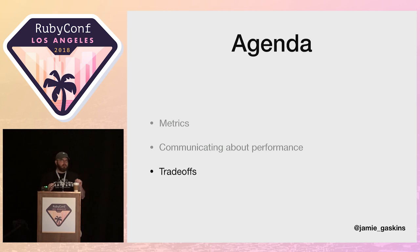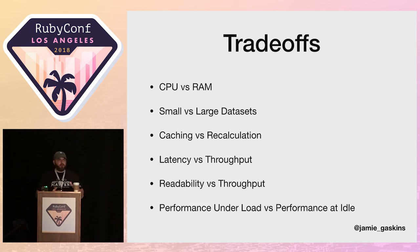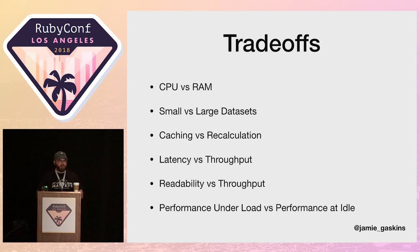So that's communicating about performance. A lot of that is about removing ambiguity, because if you want to optimize your communication, removing ambiguity is one of the biggest factors. Next we're going to talk about trade-offs. There are a lot of different trade-offs you can make: CPU consumption versus RAM consumption, small data sets versus large data sets, caching versus recalculation, latency versus throughput, readability versus throughput, and performance under load versus performance at idle.